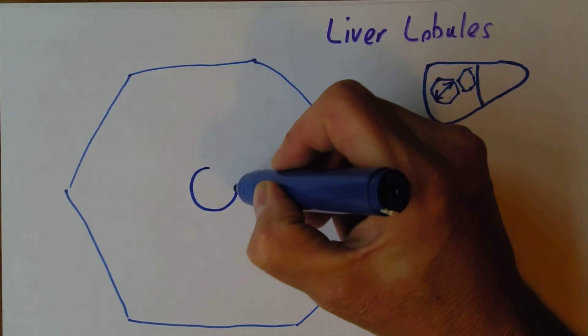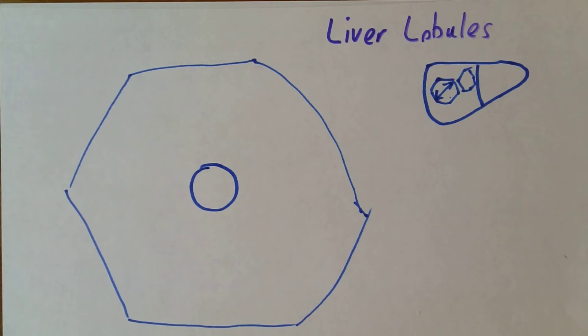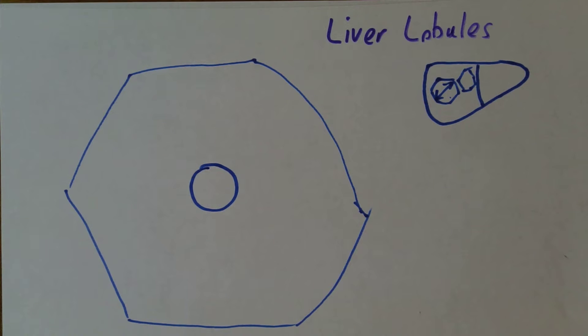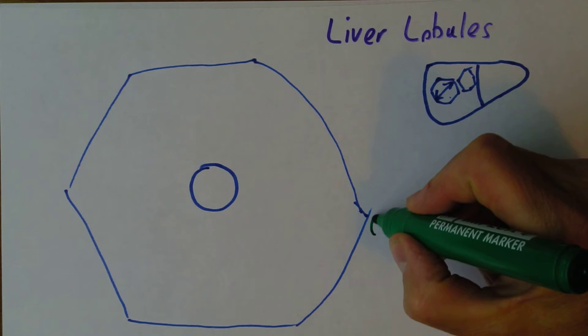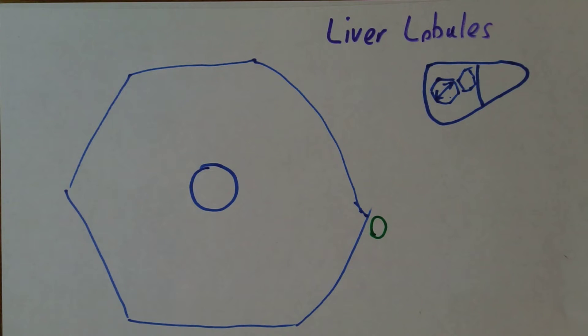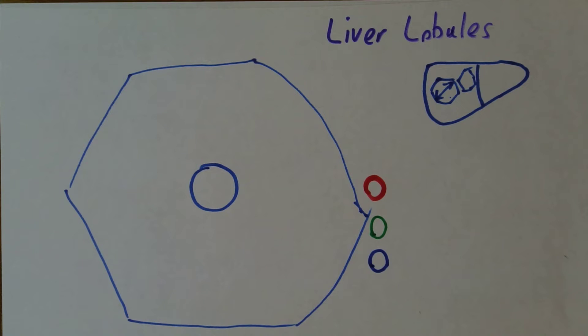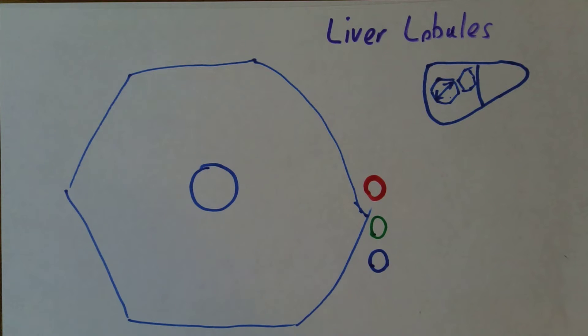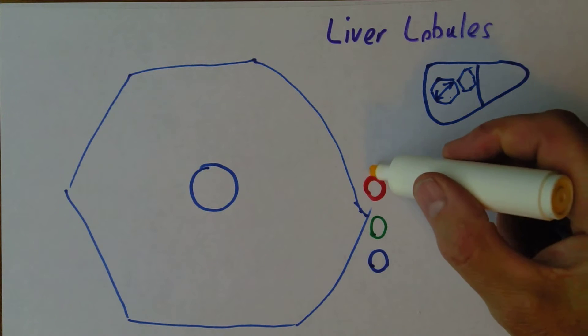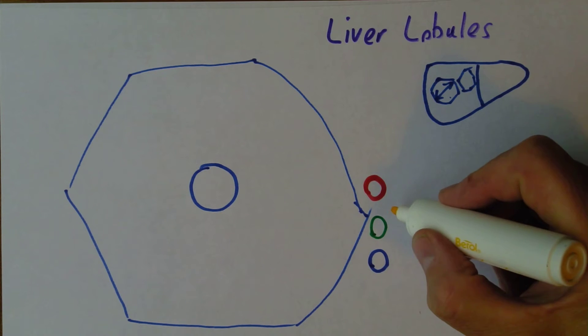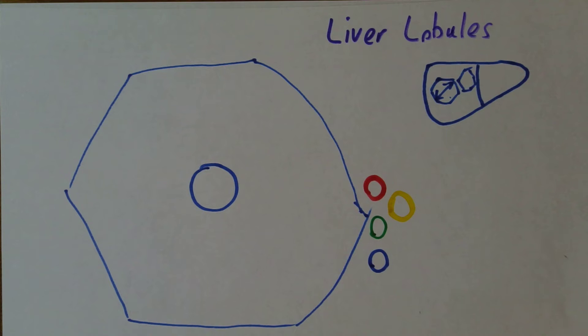In the lobule there's the central lobular vein. Now at the corner there's different vessel structures. There's bile channels which we'll do in green, there's channels from the hepatic artery which we'll do in red, channels from the hepatic vein which we'll do in blue because it carries relatively deoxygenated blood. Initially this was called the triad but we now know there's lymphatic vessels as well which we'll draw in yellow.